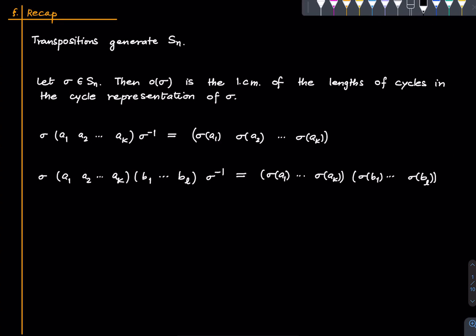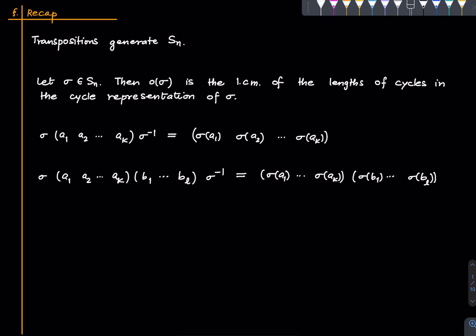Welcome to this lecture series in group theory. In this lecture we'll be discussing the automorphism groups of permutation groups. Let us recall a few things that we need. First, transpositions generate Sₙ. Then we saw that if we have a permutation in Sₙ, the order of that permutation can be calculated by taking the LCM of the lengths of the cycles appearing in the cycle representation of sigma.